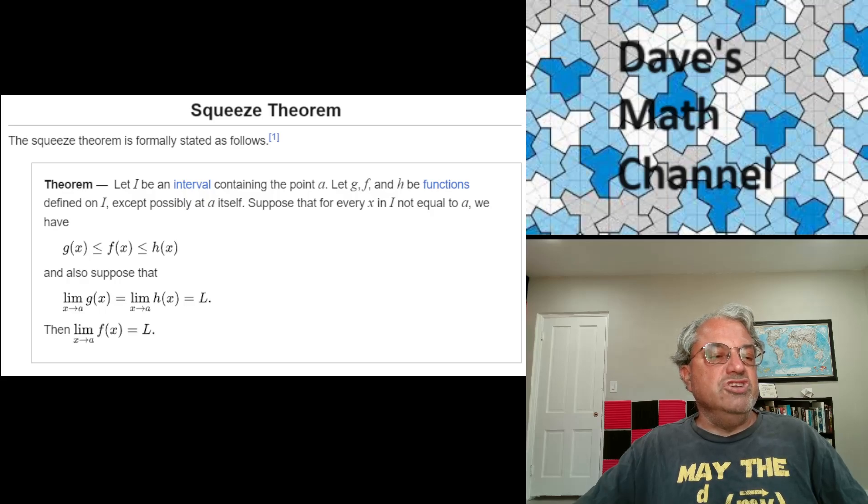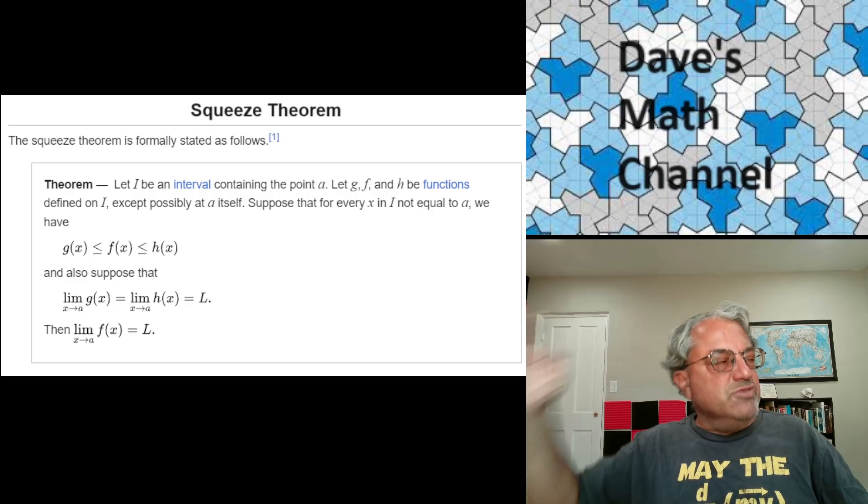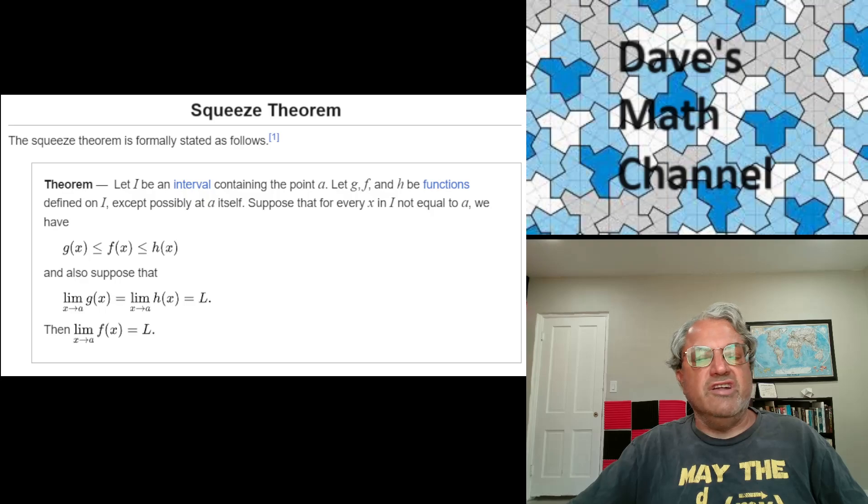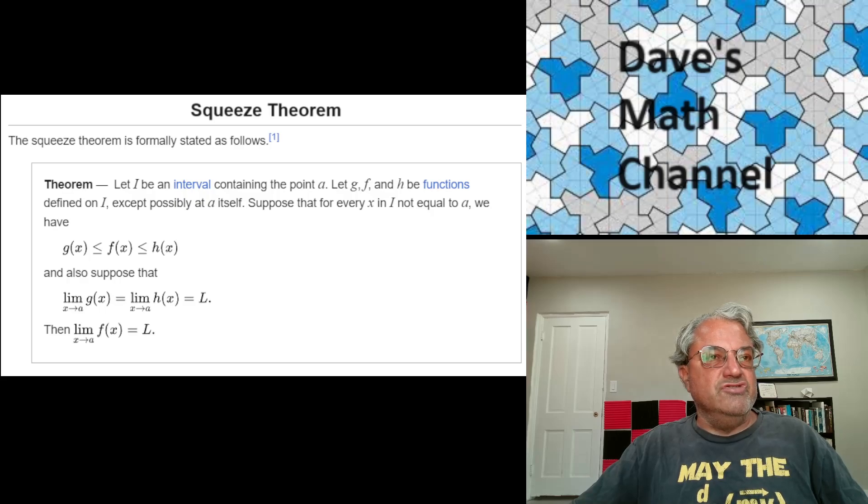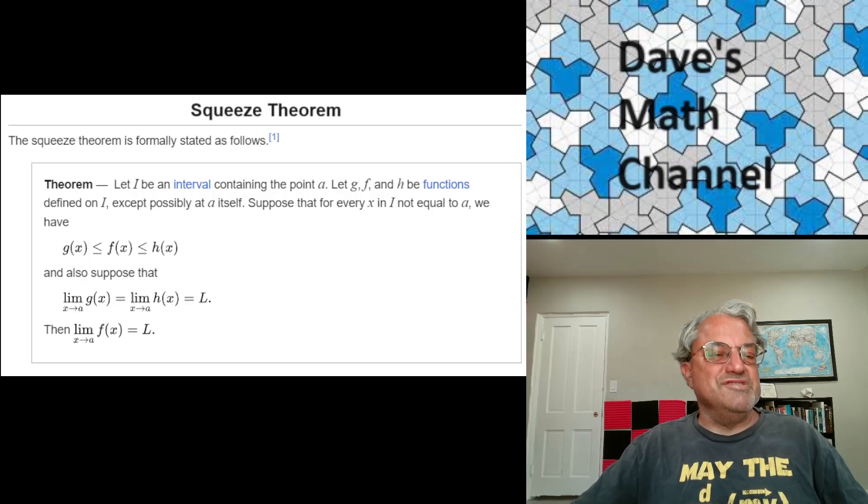So what this theorem is saying is if we have g of x is less than or equal to f of x is less than or equal to h of x for every point x on this interval except for A. So I think you can see why this is called the Squeeze Theorem now, because f of x is squeezed between these two other functions, g of x and h of x. Sometimes it's called the Sandwich Theorem, because if you graph g and h, it kind of looks like a sandwich.